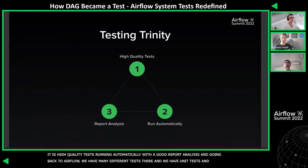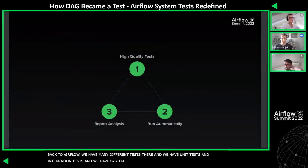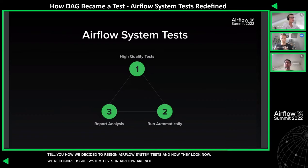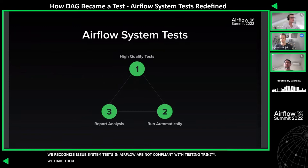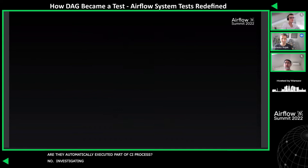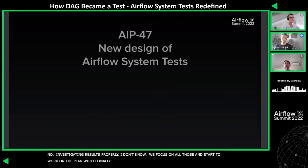and we have system tests — the celebrity of this talk. I'm going to tell you about how we decided to redesign Airflow system tests and how they look like now. We recognized an issue that the system tests in Airflow are not compliant with the testing trinity: they're not always executed, not always of high quality, not automatically executed as part of CI, and results aren't properly investigated. So we focused on all of those areas and started working on a plan, which became Airflow Improvement Proposal number 47 and was successfully approved.